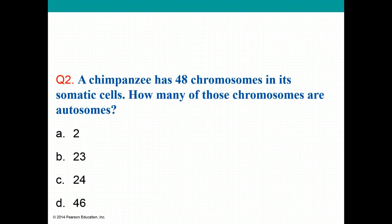Let's review. Question 2: A chimpanzee has 48 chromosomes in its somatic cells. How many of those chromosomes are autosomes? Choose the correct answer.